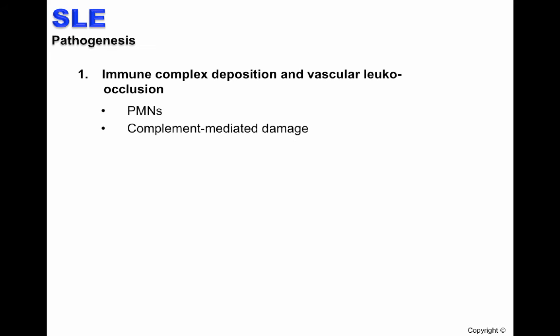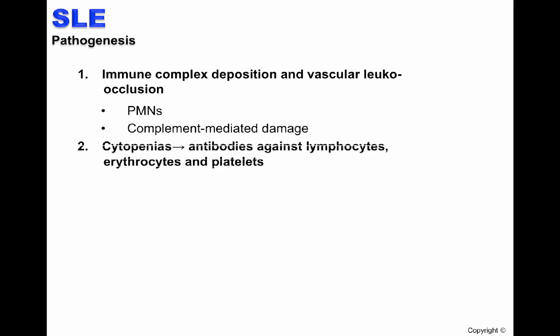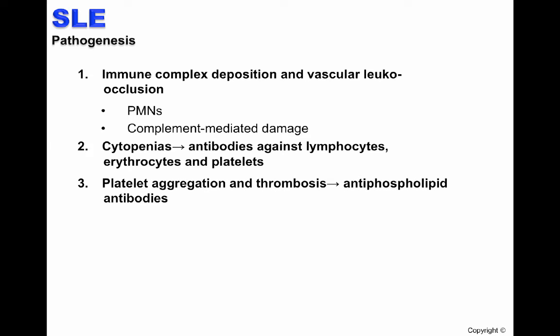There are three important pathogenic mechanisms of SLE. One: immune complex deposition and vascular leuko-occlusion, which can be caused by polymorphonuclear cells (PMNs) or the complement system. Two: cytopenias, caused by antibodies against lymphocytes, erythrocytes, and platelets. Three: platelet aggregation and thrombosis due to antiphospholipid antibodies.